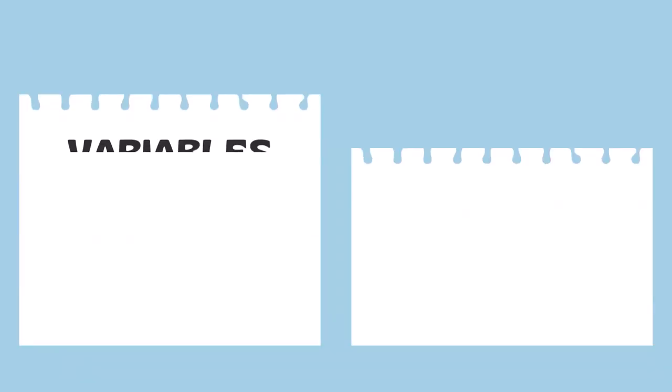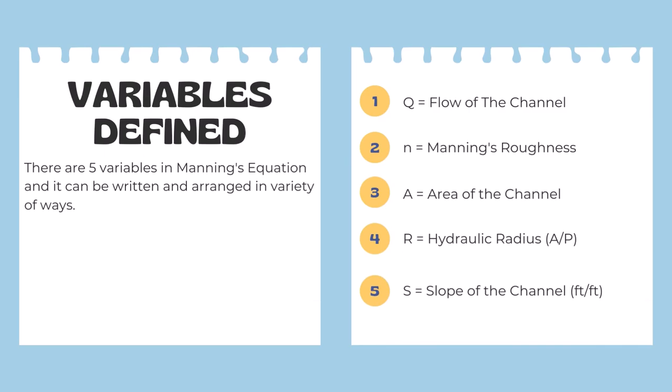But let's define all the variables in that equation. So Q equals the flow of the channel, n equals Manning's roughness coefficient, A equals the area of the channel, R equals the hydraulic radius which is the area divided by the wetted perimeter, and S equals the slope of the channel typically measured in feet over feet.